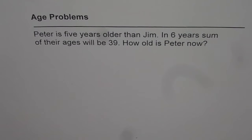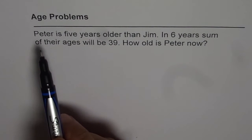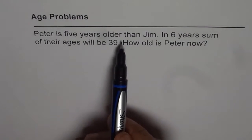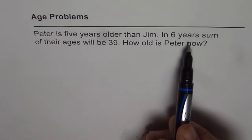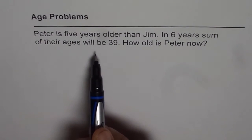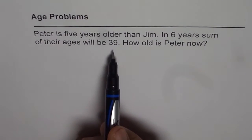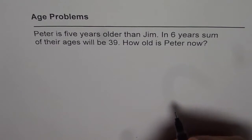Let us now understand how to solve word problems relating to age. The question is: Peter is 5 years older than Jim. In 6 years, the sum of their ages will be 39. How old is Peter now?